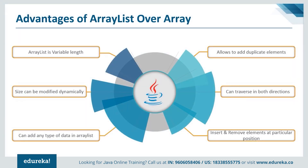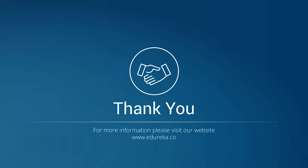Now let's jump into the last topic — advantages of ArrayList over arrays. First, ArrayList is variable length while arrays are fixed length; you cannot change the size of an array once created, but ArrayList can grow and shrink dynamically. The size of ArrayList is modified dynamically — adding elements increases the size and removing elements decreases it. You can add any type of data and it also allows duplicate elements. You can traverse an ArrayList in both forward and backward directions using ListIterator, and it allows inserting and removing elements at a particular position. I hope you understood the concept of ArrayList and the difference between array and ArrayList. That's all for the session, thank you and have a nice day.